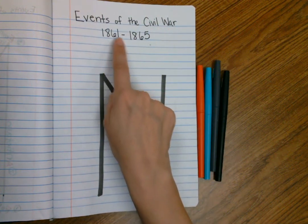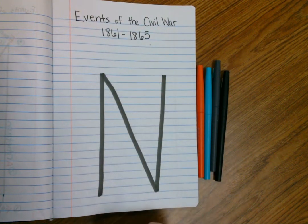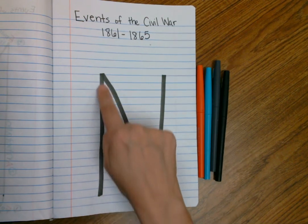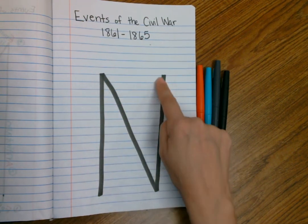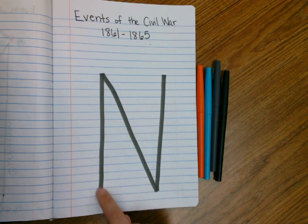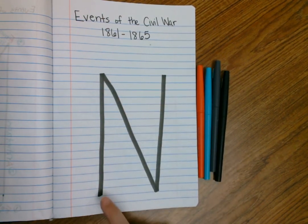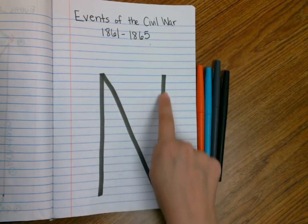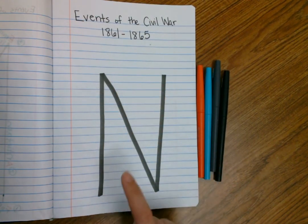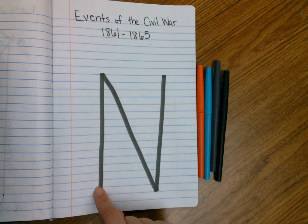So the events of the Civil War, 1861 to 1865. To know our events and remember our events, we have the letter N. This is going to serve as our timeline. And you're probably wondering, how is the letter N a timeline? Well, it is telling us that the North wins.